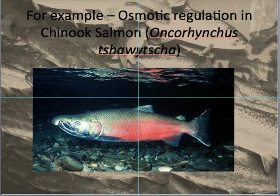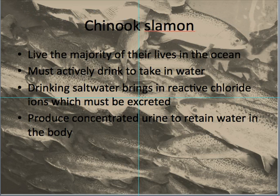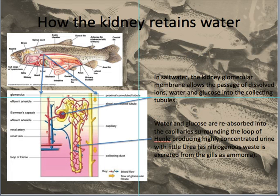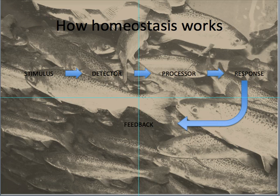My example is all about Chinook salmon, and they live in the ocean. They have to, therefore, actively drink lots of water. And when they do that, they actually bring in lots of chloride ions, which isn't very good. The kidney works by taking all the stuff that's in the blood, filters it all through a structure called the glomerulus, and all the water and various other dissolved ions travel through into the collecting duct. They all travel down to a structure called the loop of Henle, which reabsorbs as much water as possible. So this is all part of the homeostatic control.